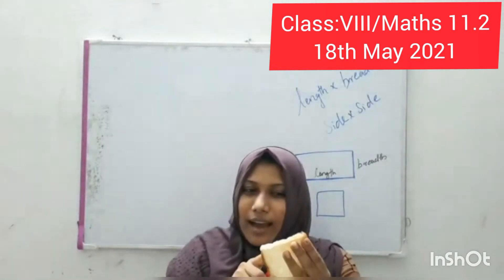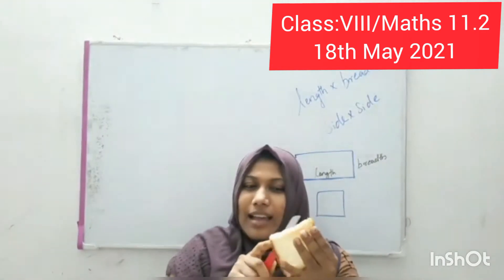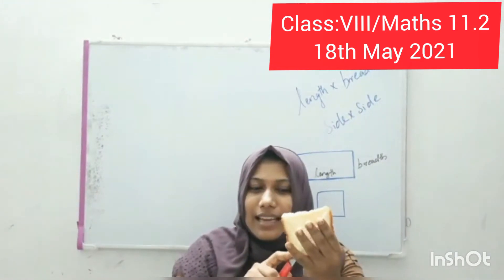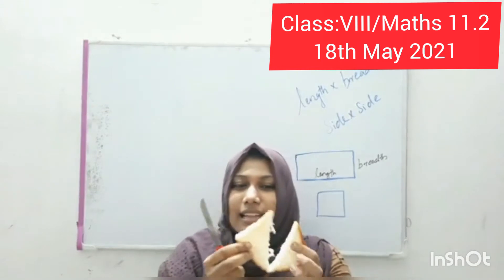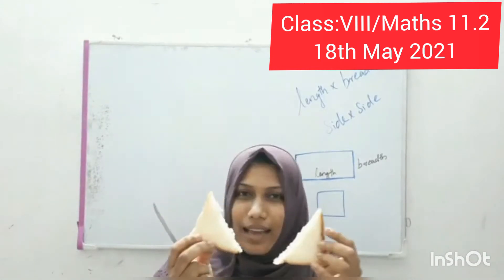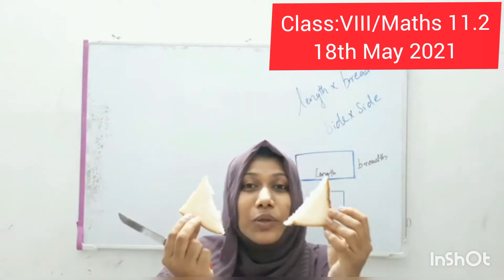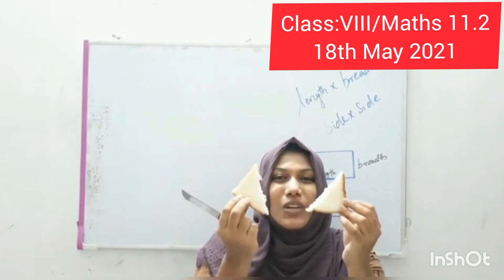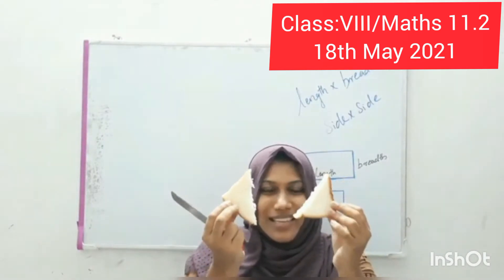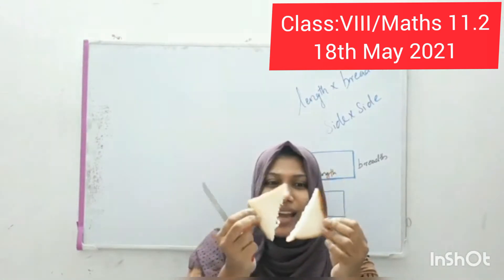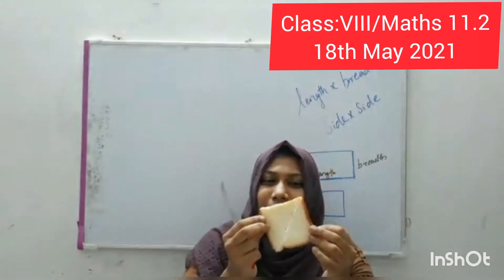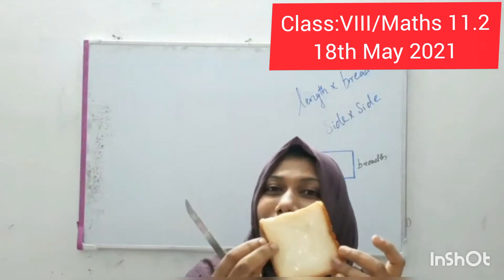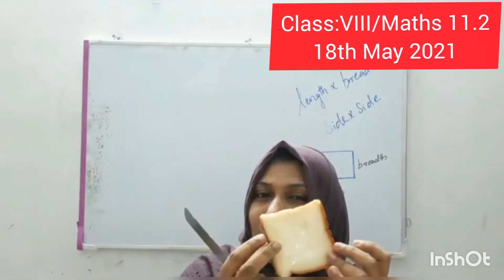Usually we cut in this manner — and we get a triangle shape. When we join the two triangles, we get the square bread piece.